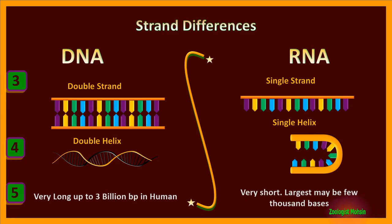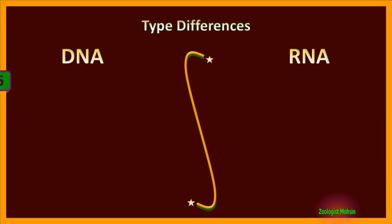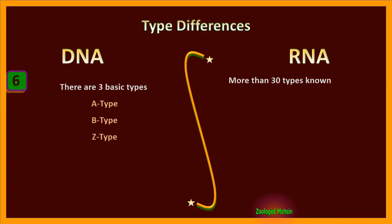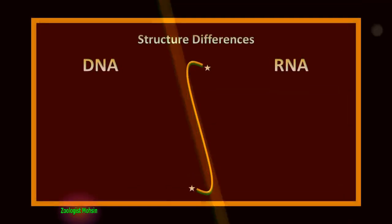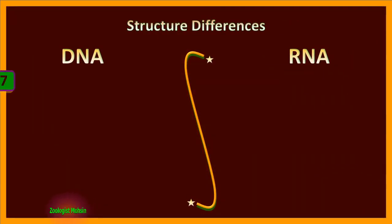Type differences. DNA has three basic types: A-type DNA, B-type DNA, and Z-type DNA. While RNA has more than 30 valid known types like translational RNAs including ribosomal RNAs, transfer RNAs, messenger RNAs, similarly regulatory RNAs, post-modificational RNAs, viral RNAs, parasitic RNAs, etc.